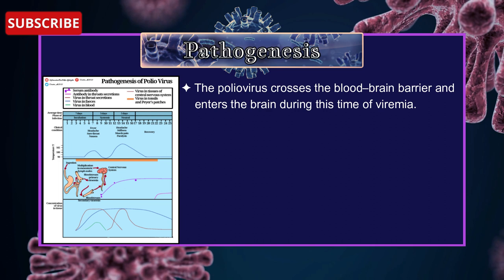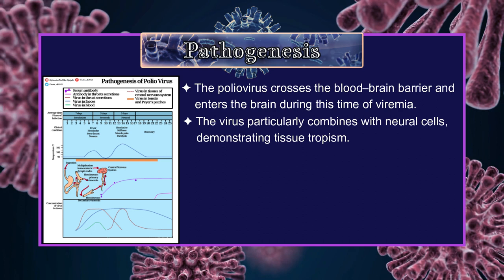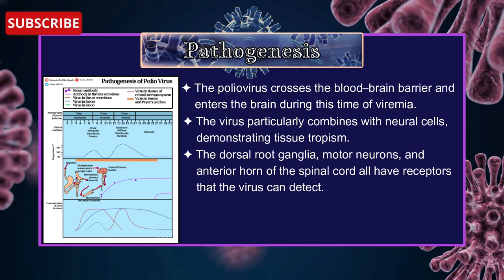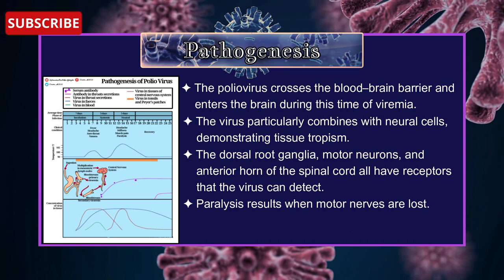The virus particularly combines with neural cells, demonstrating tissue tropism. The dorsal root ganglia, motor neurons, and anterior horn of the spinal cord all have receptors that the virus can detect. Paralysis results when motor nerves are lost. The virus infection of the brain stem results in bulbar poliomyelitis.